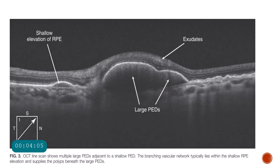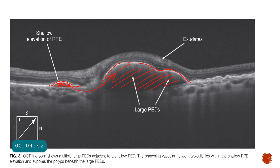In this OCT picture, you can see a big retinal pigment epithelial detachment. The RPE is not seen within it, so this is likely a sanguineous pigment epithelial detachment. Adjacent to that you can see a shallow pigment epithelial detachment. The branching vascular networks are considered to be present within this shallow PED, feeding the tall PED which houses the polyps. Because there is blood within that tall PED, we are not able to see the polyps.